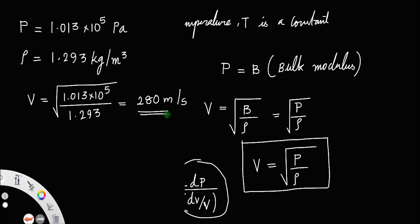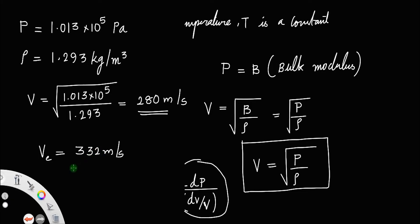The experimental value of the velocity of sound is 332 meters per second, whereas Newton's formula gives 280 meters per second. There is a huge difference between these two values — they are not in close agreement. So there must be some correction to Newton's formula.